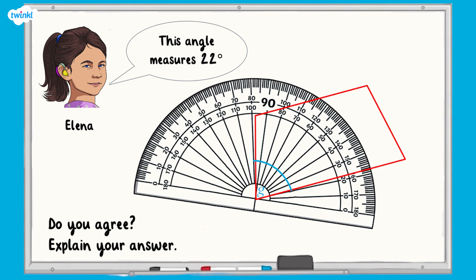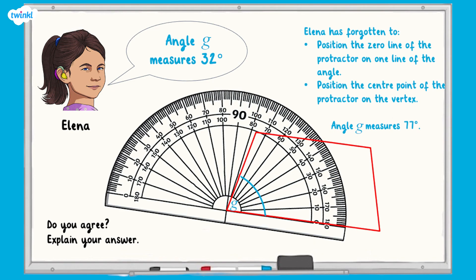All complete. Let's have a look at the answer together. Elena has forgotten to position the zero line of the protractor on one line of the angle and position the center point of the protractor on the vertex. Angle G is 77 degrees.